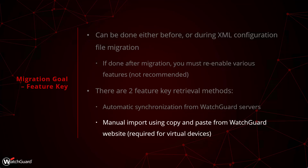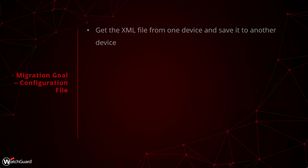The alternative is to manually import the feature key. This involves logging into the WatchGuard website, searching for the serial number, finding the device, clicking the feature key option, and copy-pasting the contents — typically into a text file for easy reference or later import. This option is required for virtual devices, since this is what sets the serial number on those devices. They cannot call home and retrieve a key because they don't know their serial number at that point.